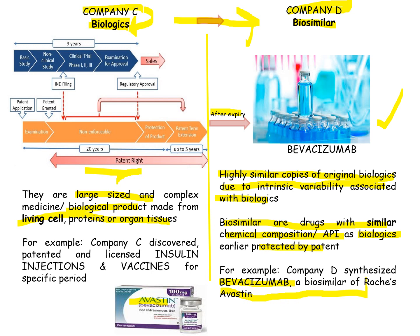To clarify biosimilar preparation, consider apple juice made at home: if you cut fresh apples and prepare the juice yourself, and I do the same, our results may vary slightly — hand to hand, process to process. But if the same juice is made in a particular industry, its composition is standardized and consistent. Both products are juices and are similar, but they are not identical to each other — this illustrates the difference between biologics and biosimilars.